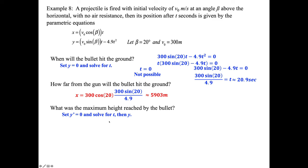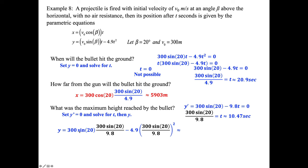For maximum height, take the derivative y' = 300·sin20 − 9.8t, set equal to 0, and solve for t = 300·sin20 / 9.8. Plug that back into the original y equation: y = 300·sin20·t − 4.9t², with t = 300·sin20/9.8, which gives a maximum height of approximately 537 meters. That covers section 10.1.